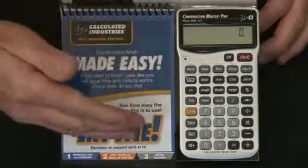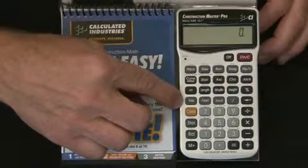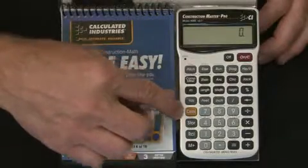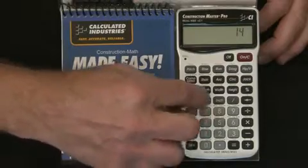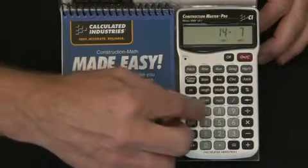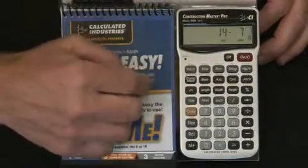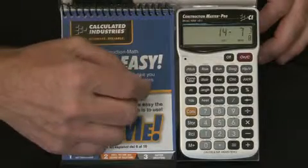First off, it's a dimensional calculator that works in all the same units that you do. You enter a value just the way you say it. For instance, 14 feet, 7 inches, and 7/8ths, just the way you write a fraction, all the way down to 64ths of an inch.